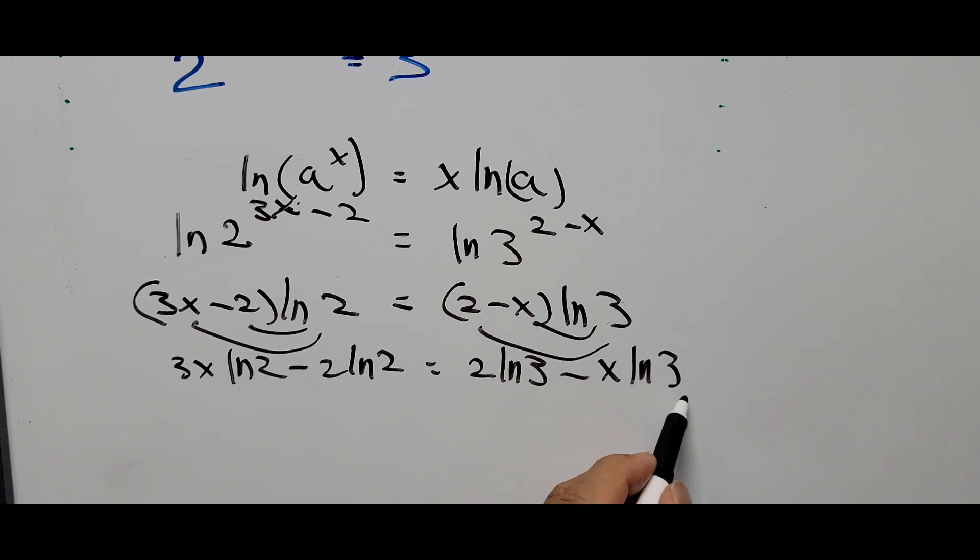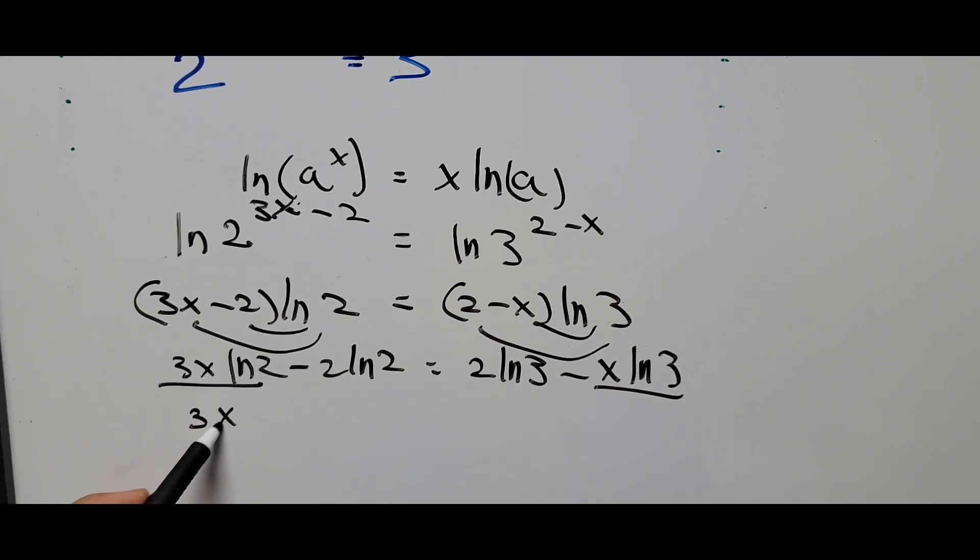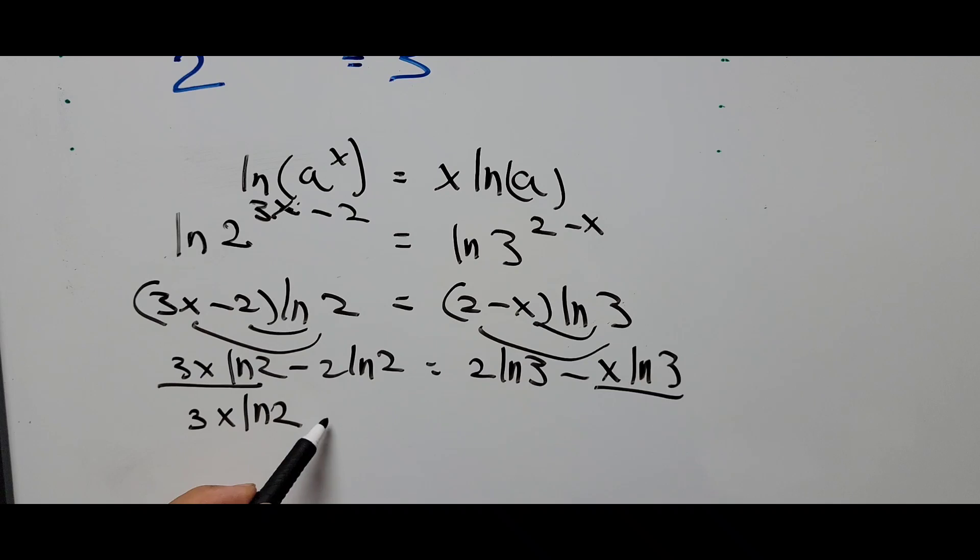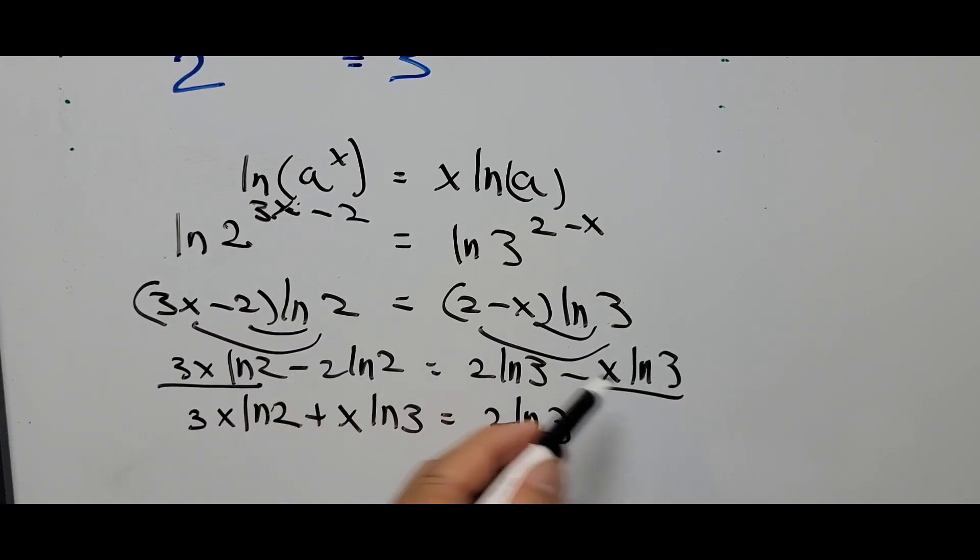We'll move this term right there to the left. So that is 3x ln of 2, minus becomes plus x ln of 3 equals 2 ln of 3. Move this to the right, becomes positive, plus 2 ln of 2.